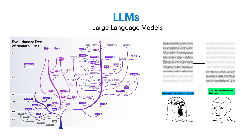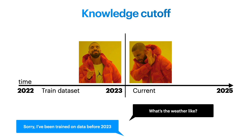From that time, the race of large language models started. Every company was investing in their own LLMs, but the main idea remained the same: text goes in, output text is generated based on context. However, this approach had a limitation — when you ask a model what the weather is like currently, the model answers 'Sorry, I've been trained on data before 2023.' This problem is called knowledge cutoff.